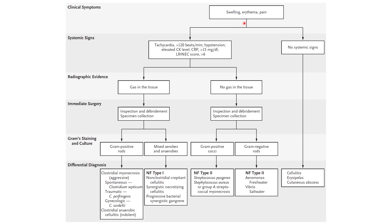These infections start with the usual symptoms of swelling, erythema, and pain. What we look for are signs of systemic involvement: tachycardia, elevated inflammatory markers such as CRP, and elevated CK levels, which can quickly indicate significant muscle damage — meaning myonecrosis is occurring. When necrotizing soft tissue infection is suspected, the team uses radiographic imaging to identify if they can see gas.